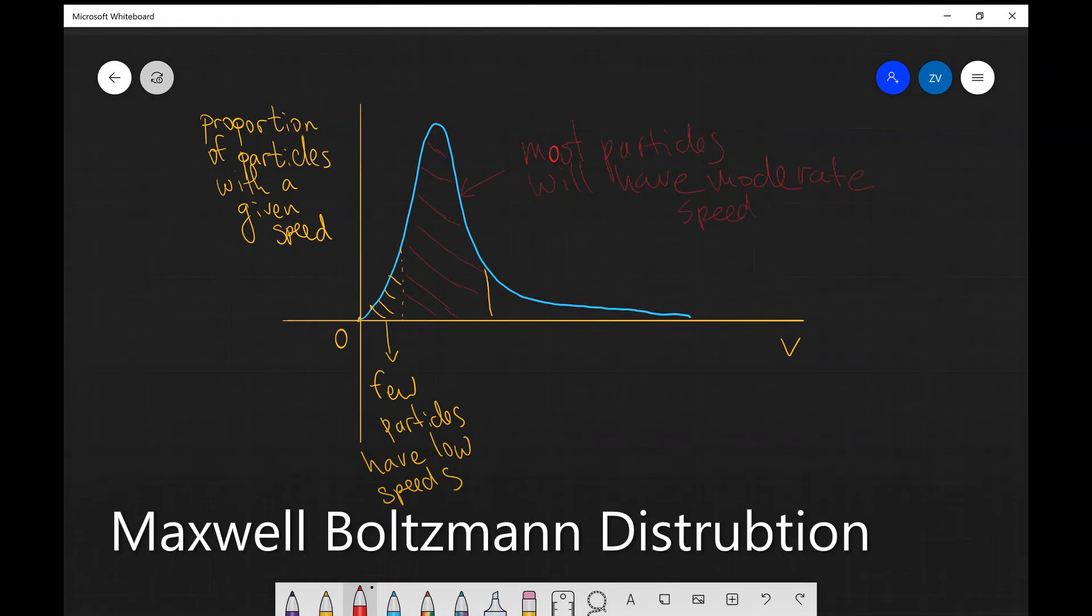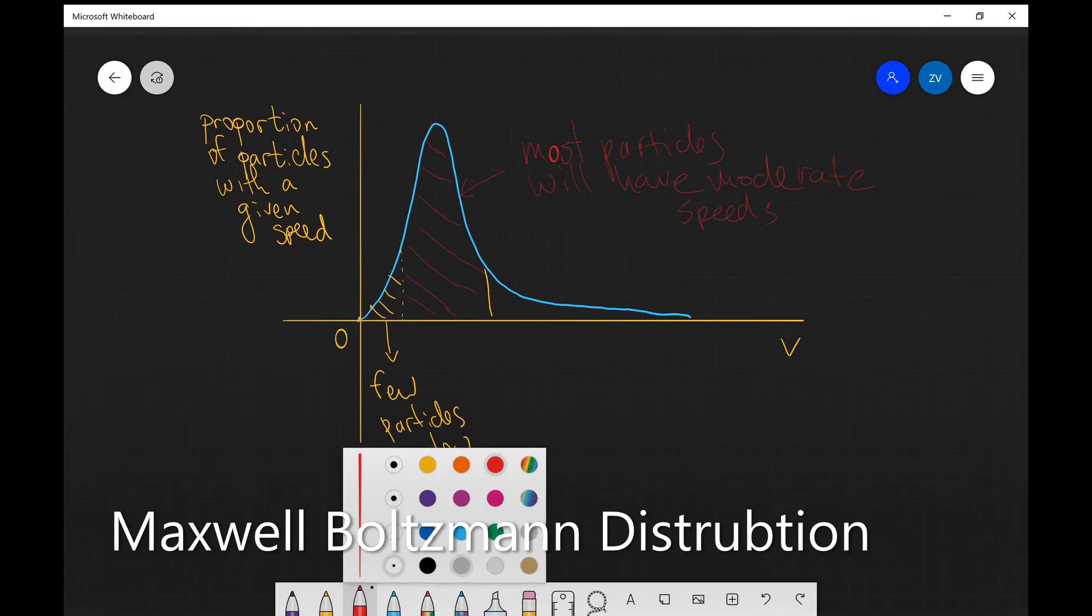And finally, at the very end of the curve, we can see that there are still a few particles that are going to have very high speeds.